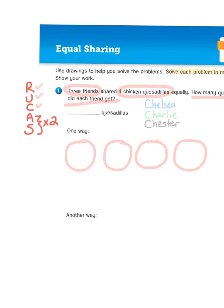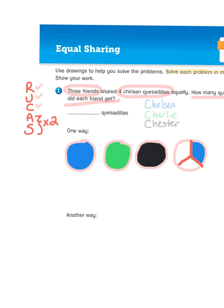So let's say that Chelsea gets the first one, Charlie gets the second one, Chester gets the third one, and then divide the last quesadilla into thirds because there's three friends. Each one would get one-third of the quesadilla. So Chelsea gets a slice, Charlie gets a slice, and Chester gets a slice.